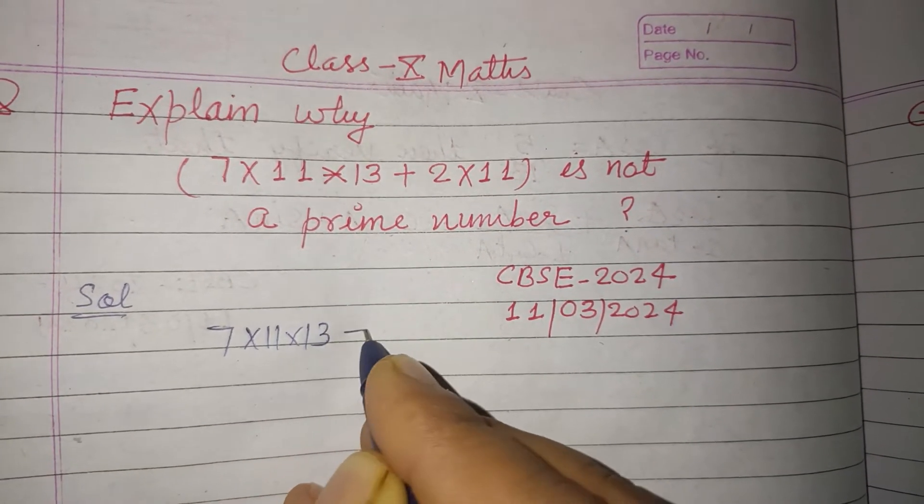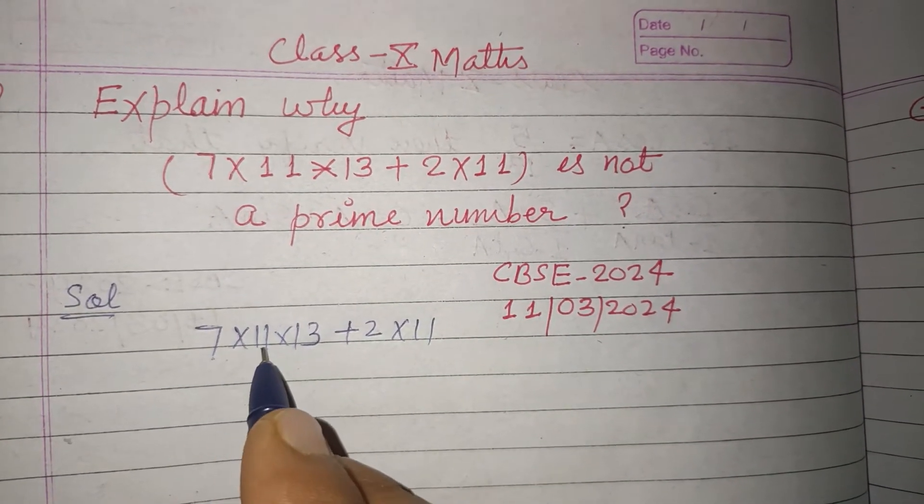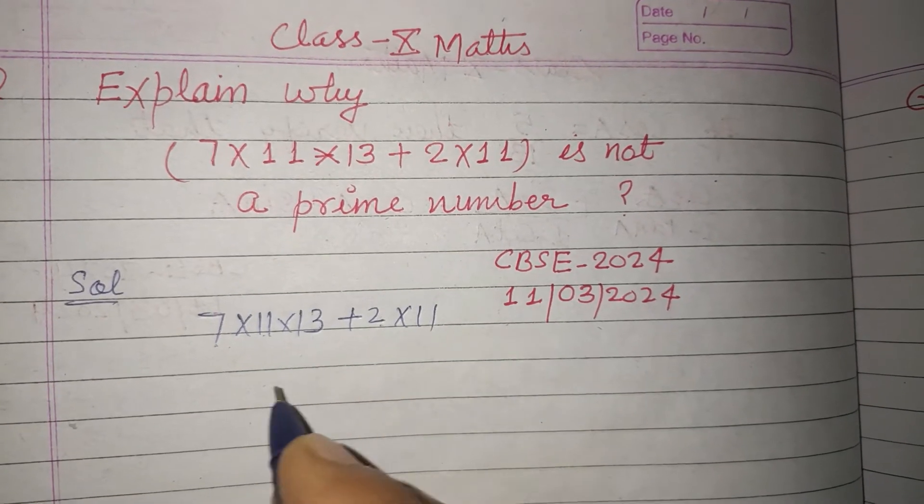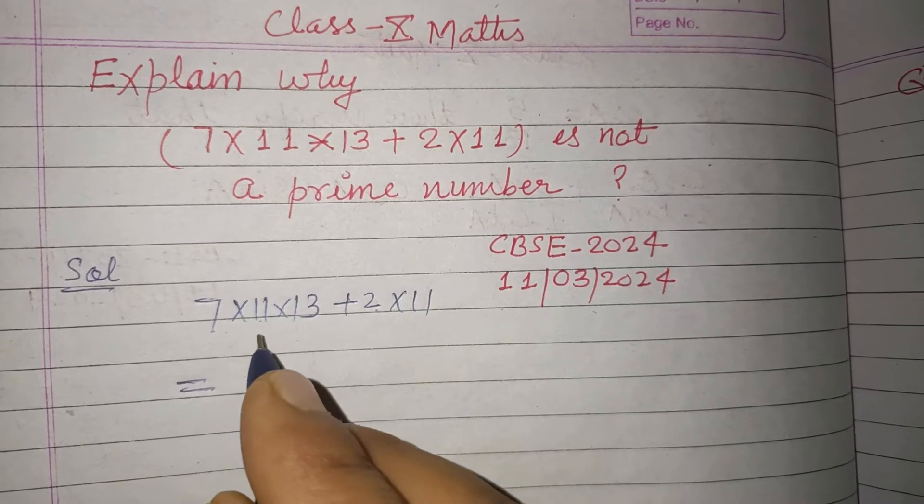Here 7 is prime, 11 is prime, 13 is prime, 2 is prime, and 11 is prime. But the total number is not a prime number. We have to prove this.